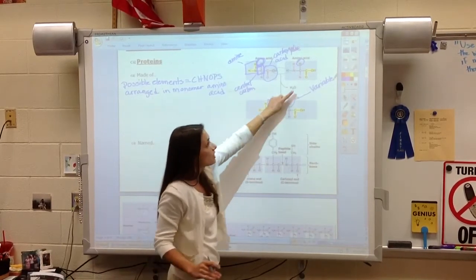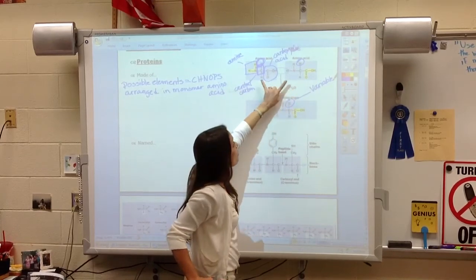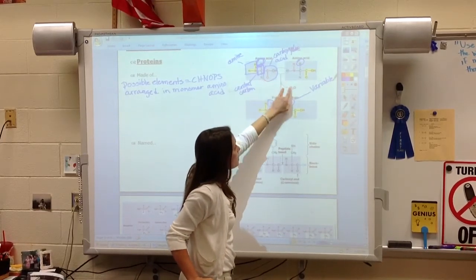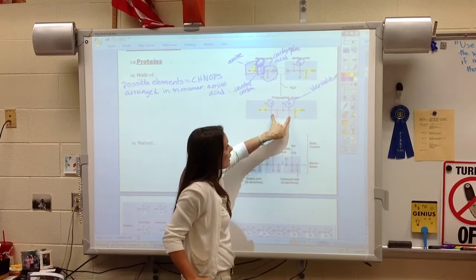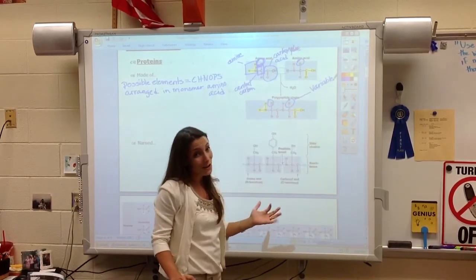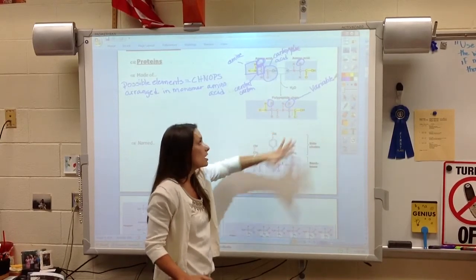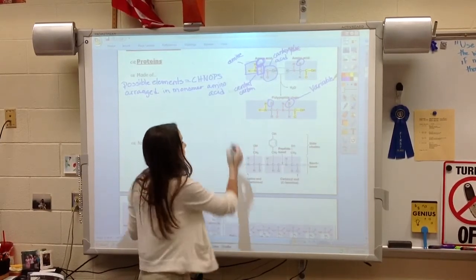When we do dehydration synthesis, see the removing of water. When we join these two amino acids, we remove water. And now we actually have what's called a polypeptide. To be accurate, this would be a dipeptide. But a polypeptide chain is multiple amino acids.